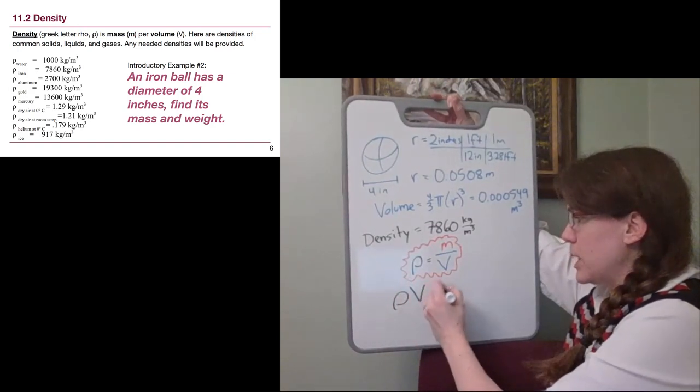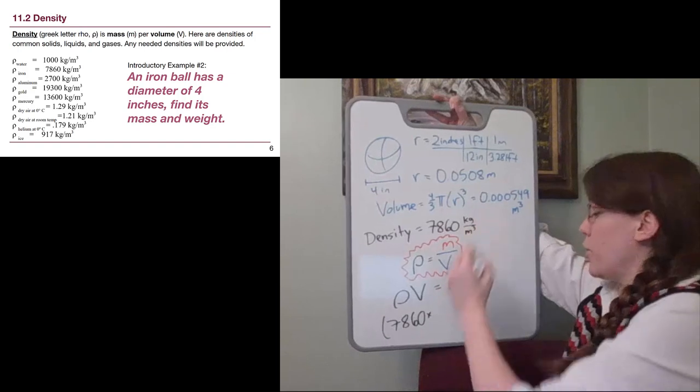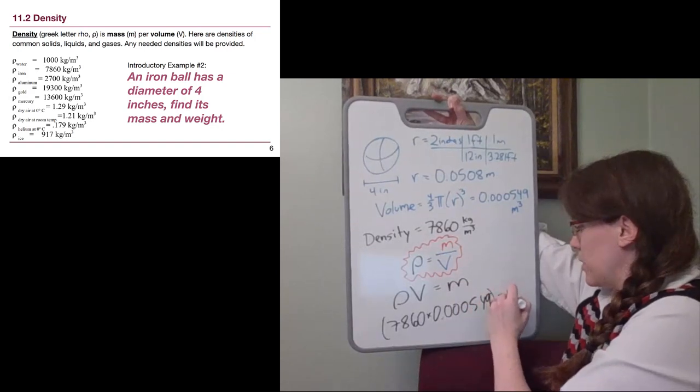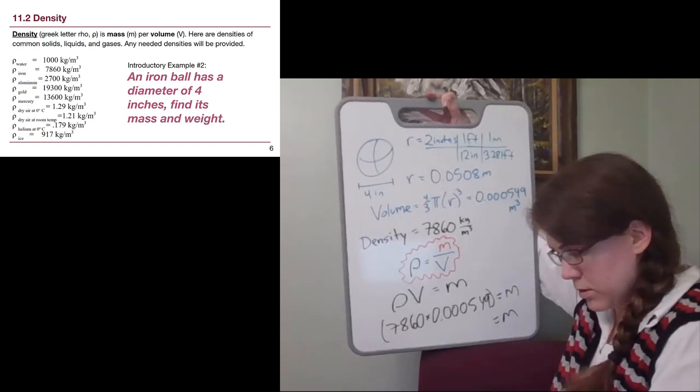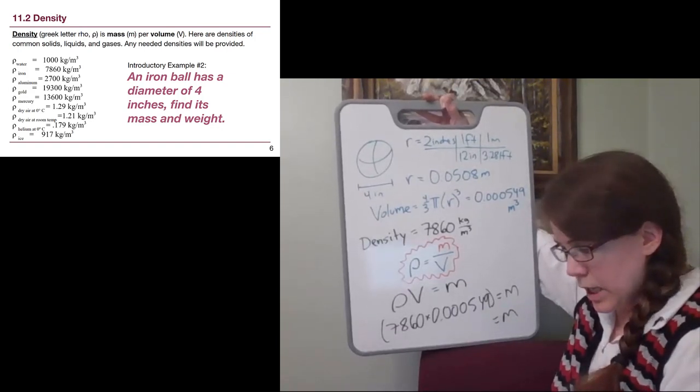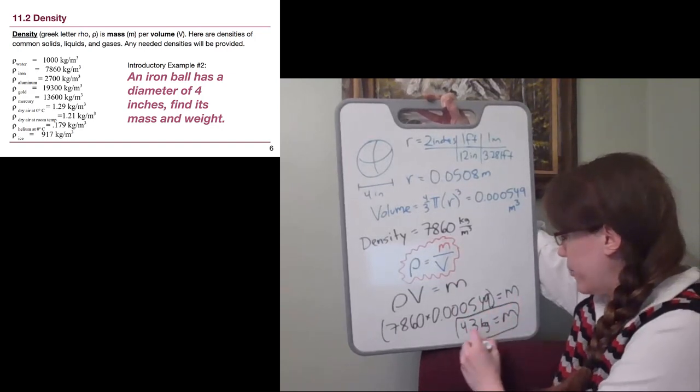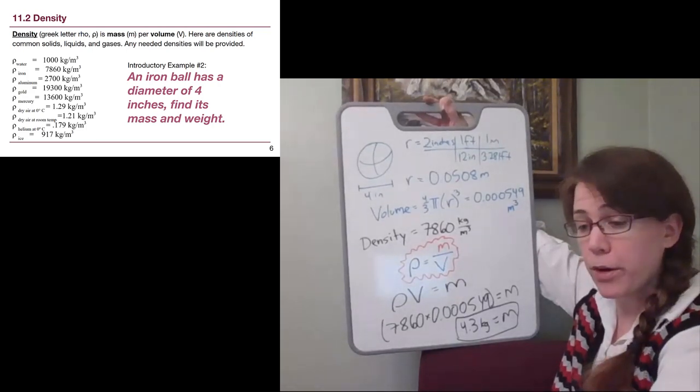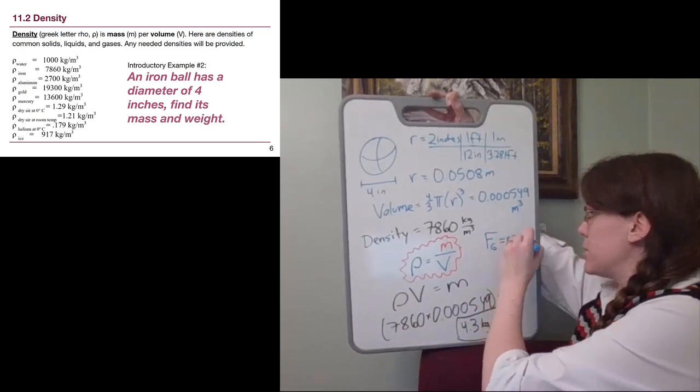The density of iron is given to us as 7,860. So we go back to our equation. Density is mass over volume. If we multiply both sides by volume, then we get density times volume equals mass. Our density is 7860, our volume is 0.000549. In our calculator, when we plug that in, we take that volume times that density and we get 4.3 kilograms.